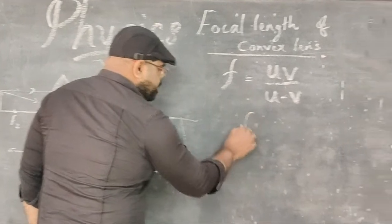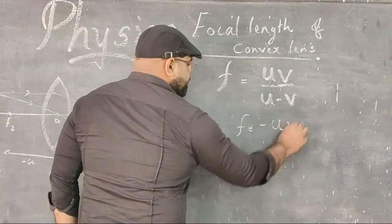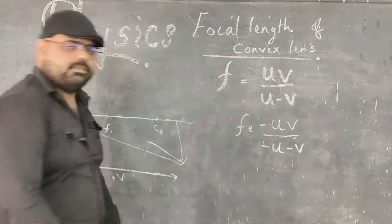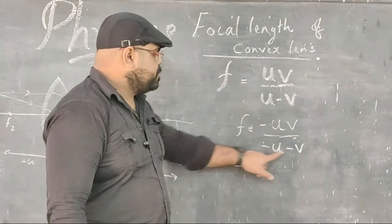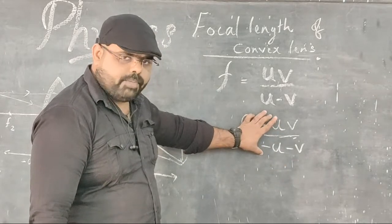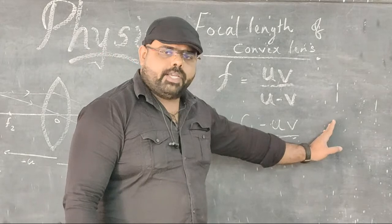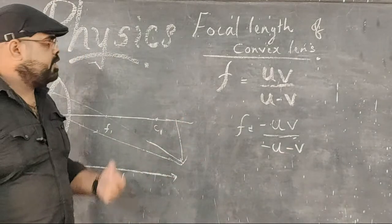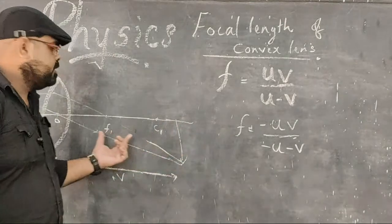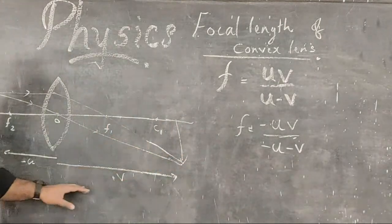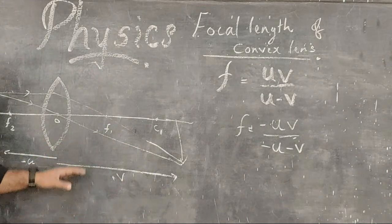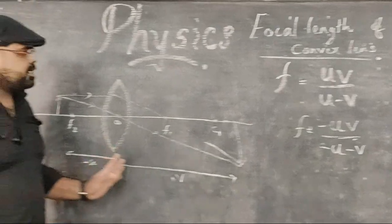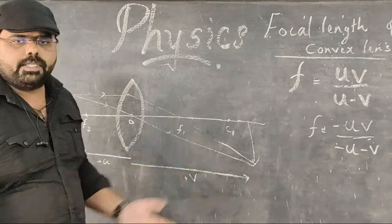So to get a positive focal length result, you must substitute the values with the Cartesian sign convention. This is very important — not only for practicals, but when you do numerical problems as well, you have to take care of sign convention during substitution. These are the initial theory points we must understand before going into the procedure.